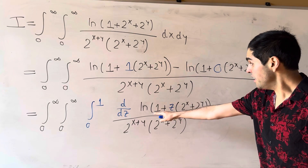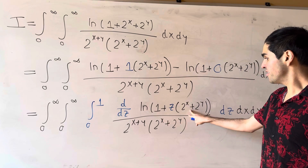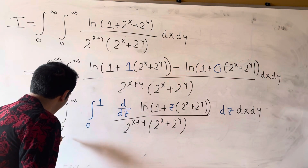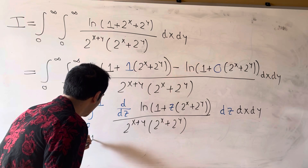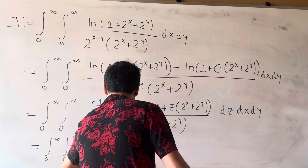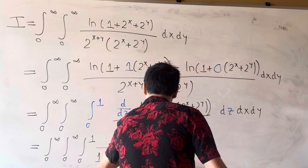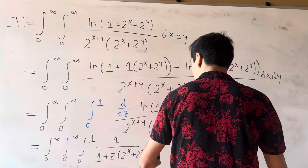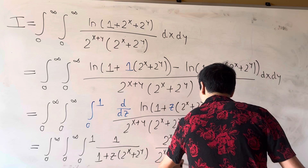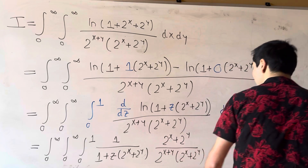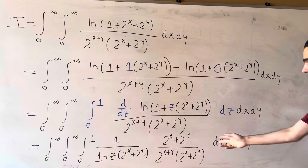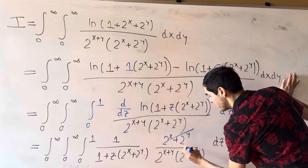The reason we do this is that this derivative is nice because it cancels out the (2^x + 2^y) factor in the denominator, leaving us with the triple integral. And as I said, that nasty term here cancels out.